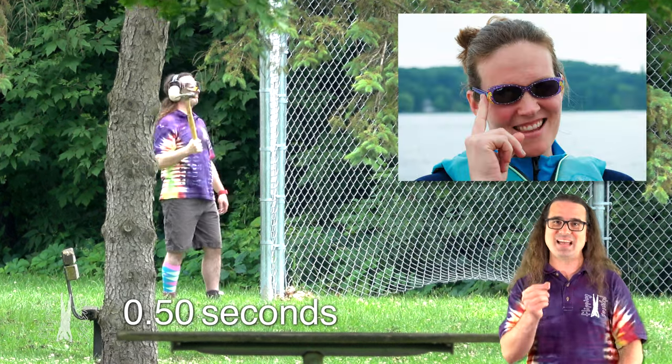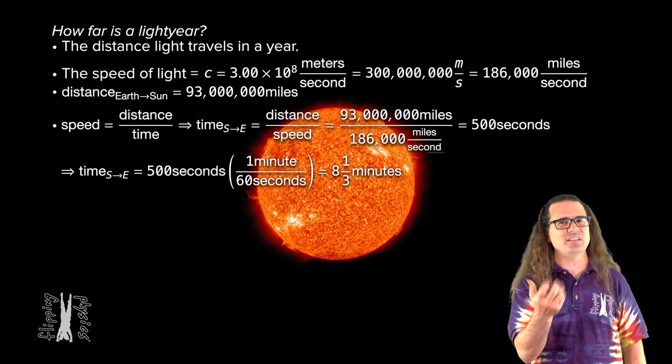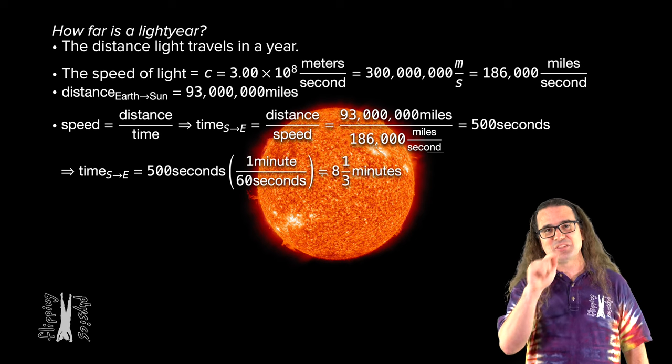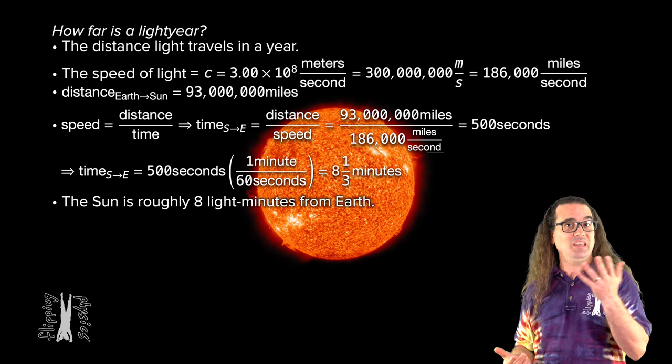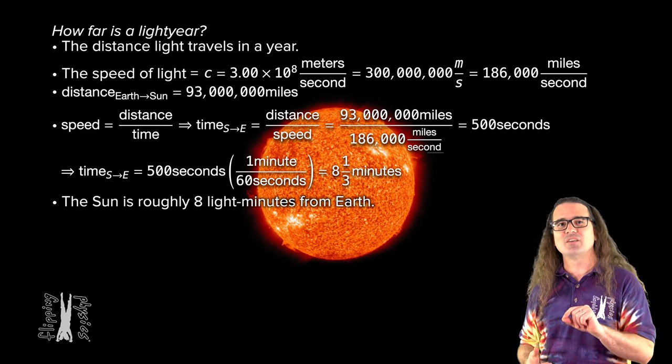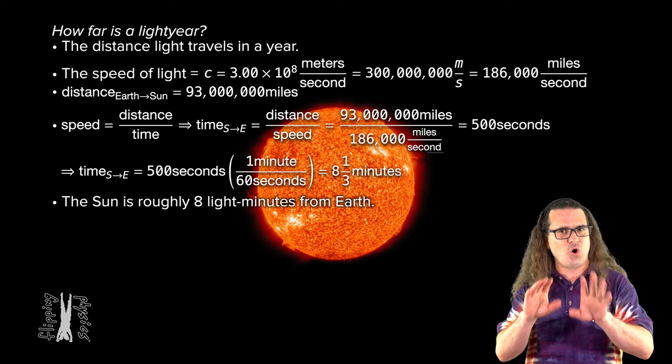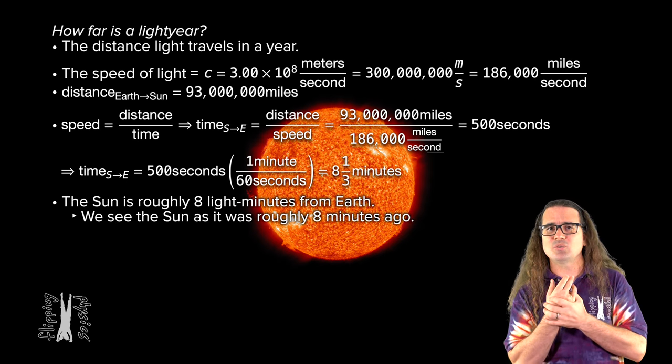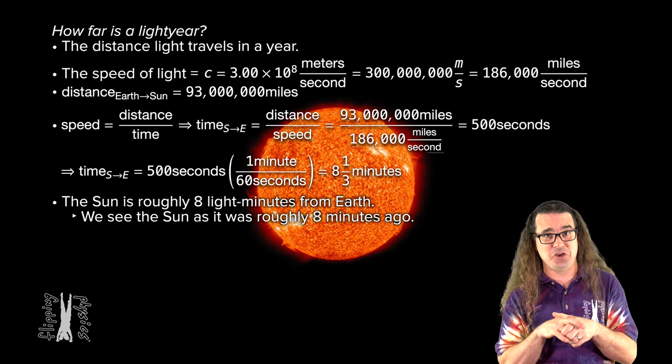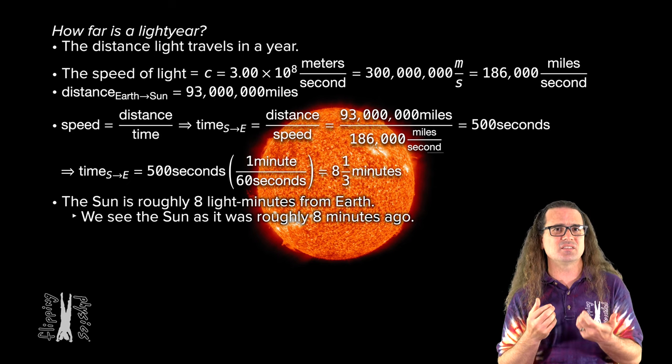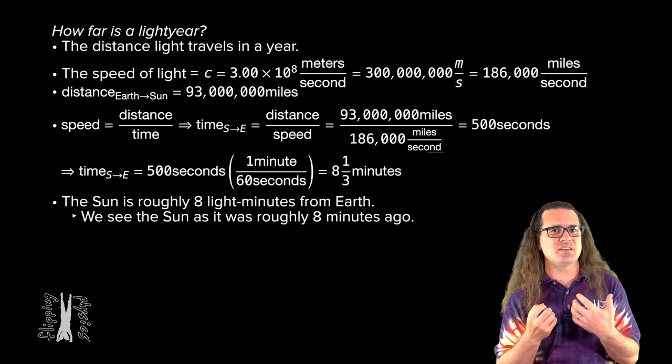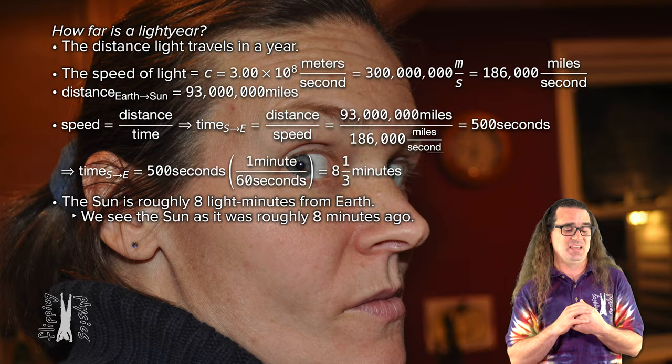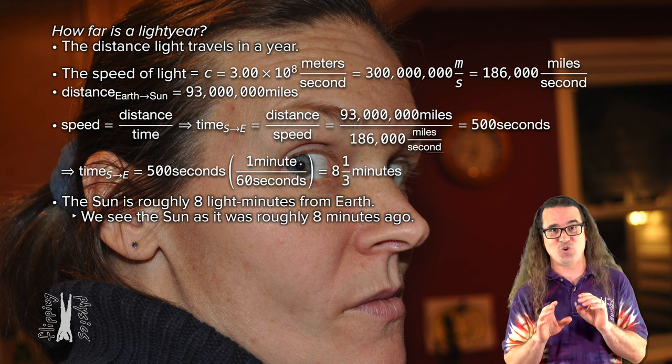Good, I'm glad that makes sense. Actually, we can go back to a calculation we did in the beginning. The sun is roughly eight light minutes from Earth. In other words, when we look at the sun, which you should absolutely only do through appropriate solar glasses, we are looking at what the sun was like eight minutes ago. If the sun were suddenly to disappear, we actually would not know it happened until eight minutes after it disappeared. I know, it's a bit overwhelming.